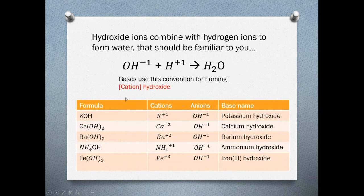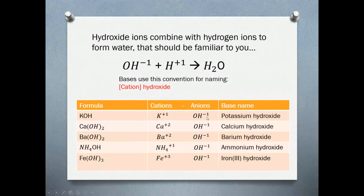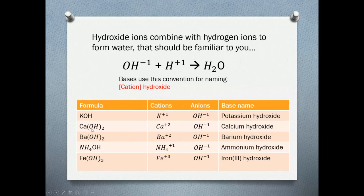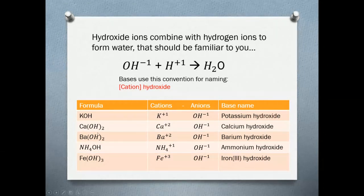Hydroxide ions combine with hydrogen ions to form water. Bases use the same naming convention we saw in acids, with the cation going first, and in this case we add hydroxide of the anion second. Here we have KOH, which is potassium cation combining with the hydroxide anion, and the name is potassium hydroxide. Here we have calcium which has a plus two charge combining with hydroxide which has a minus one charge. Crisscross applesauce gives us this formula and the name is going to be calcium hydroxide.